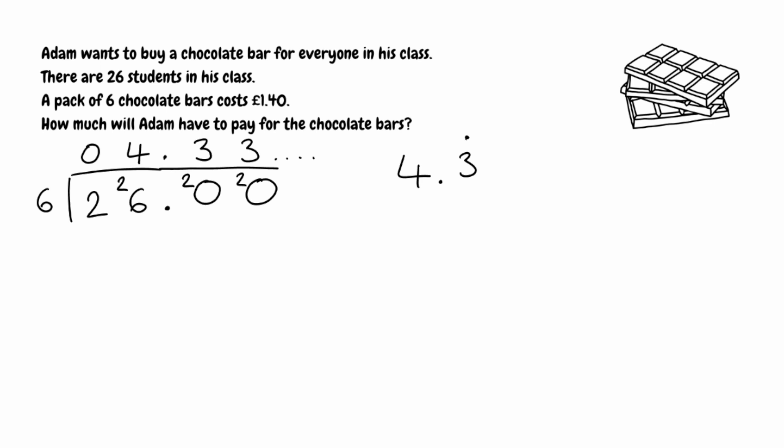This is the number of packs needed exactly for 26 chocolate bars, but we can't buy 0.3 recurring of a pack, so we need to round up to the next whole number. Adam is going to need to buy five packs of chocolate bars to make sure that everybody in his class gets one. We know he needs five packs, so now we need to figure out how much Adam has to pay. Each pack of 6 costs £1.40, and Adam is buying five packs, so we simply need to do £1.40 multiplied by 5.